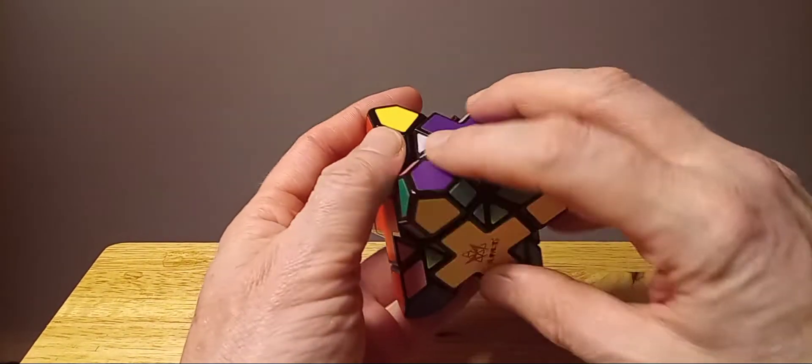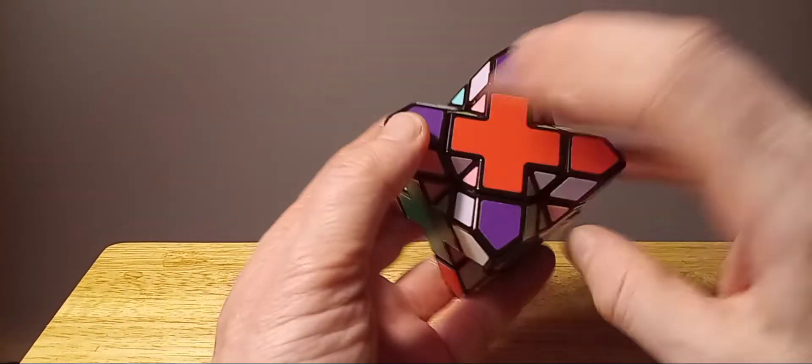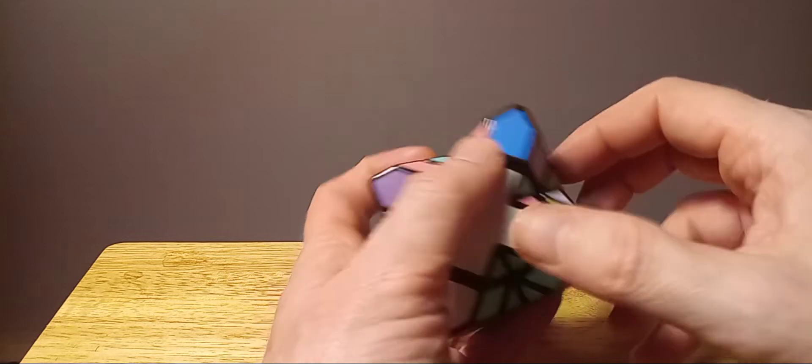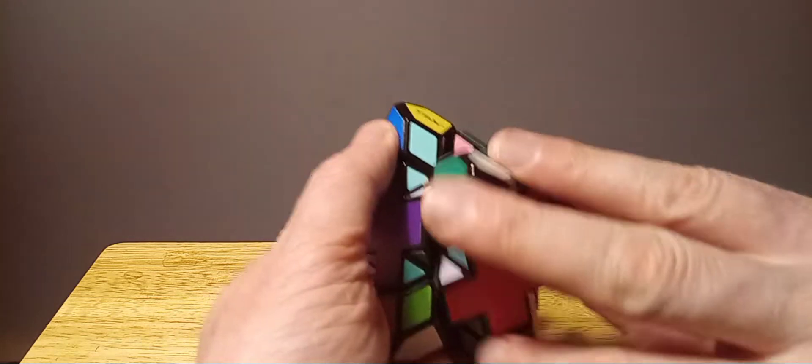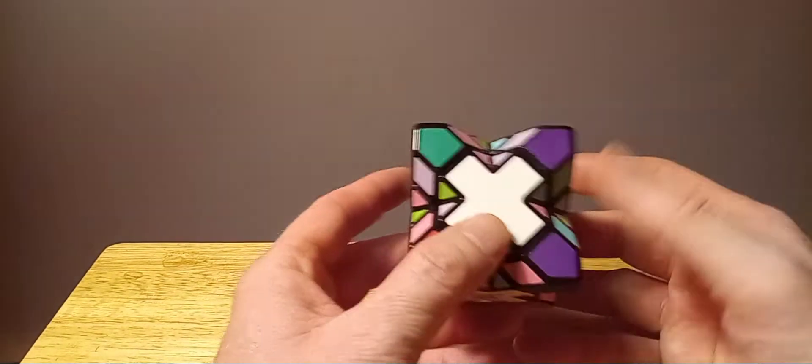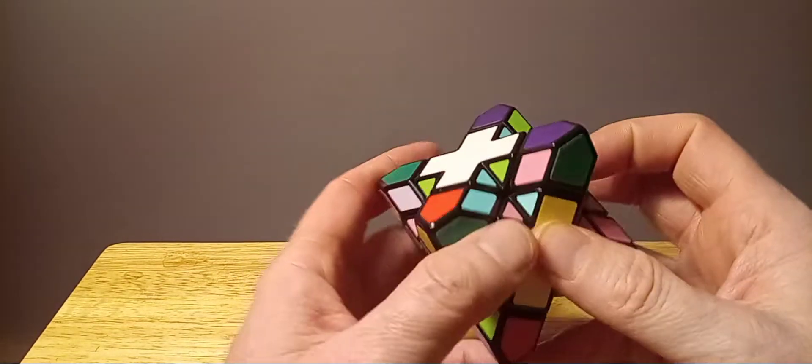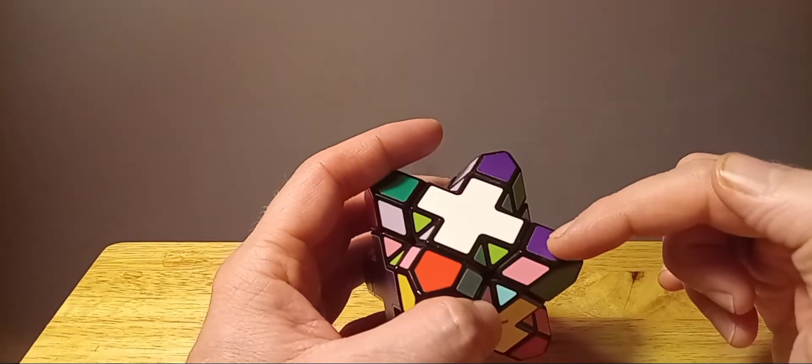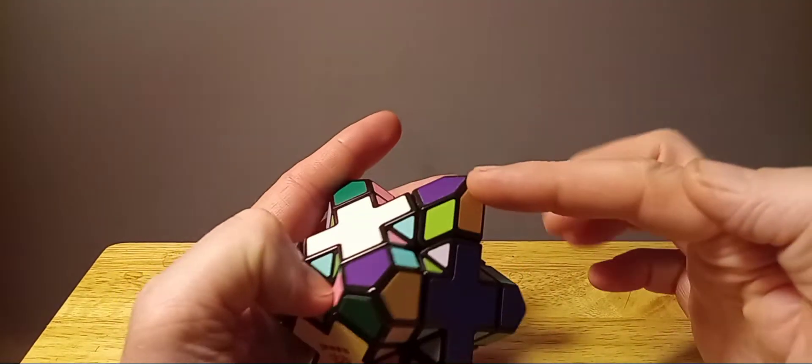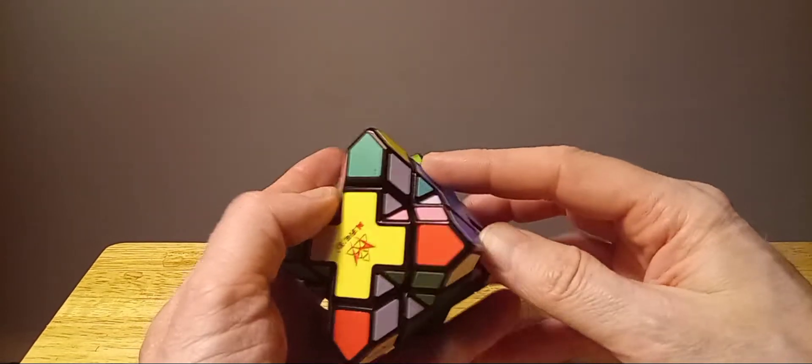So we'll do a good scramble here. Okay, so we'll start with the bottom, the white. Usually every piece that has to come up, the whites are going to be connected on the bottom or at the top, one of the eight positions, so it's pretty easy to find.